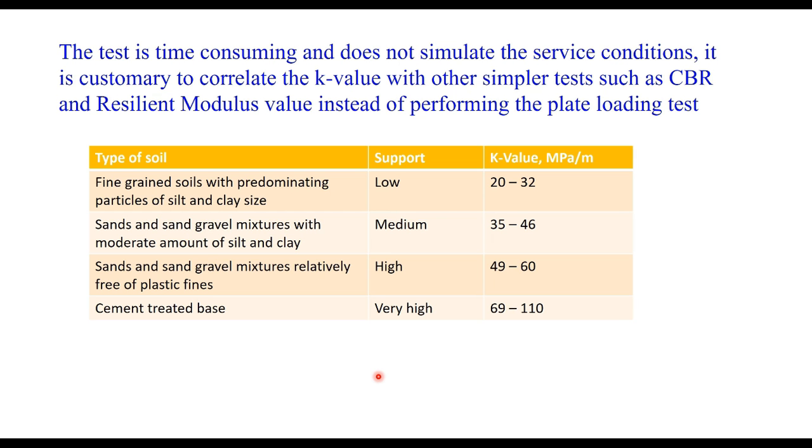This table is taken from AASHTO. For fine grained soil with predominantly particles of silt and clay size, it provides low support to the pavement and therefore the k value is in the range of 20 to 32 MPa per meter. For sands and sand gravel mixtures with moderate amount of silt and clay, it is 35 to 46 MPa per meter. For cement treated base which provides very good support to the pavement, its value can be as high as 110 MPa per meter.